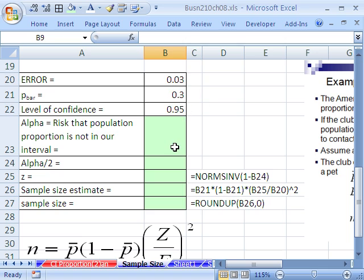Error, P bar, and level of confidence. Our alpha: 1 minus level of confidence. Our alpha divided by 2, that's the little bit on the top end if you were to plot it. And that's what we use in our NORM S INVERSE. So we'll divide that by 2. That's the error that the population parameter will not be in our interval.